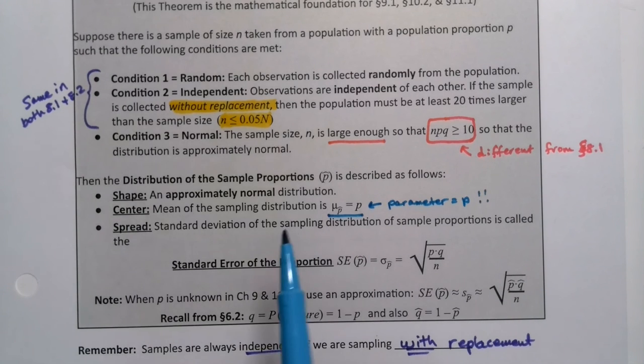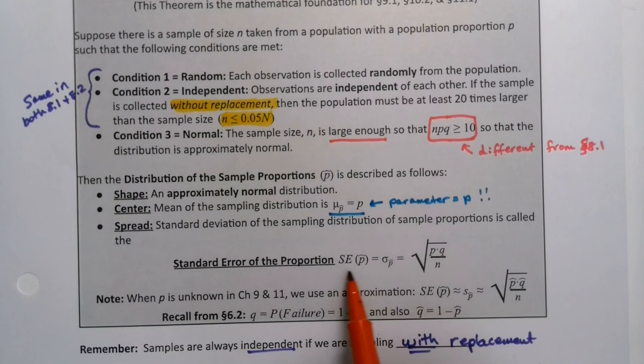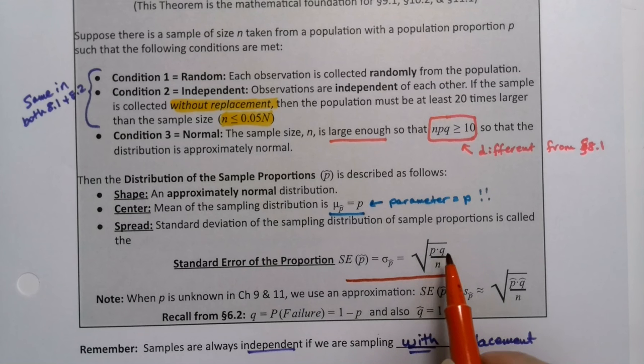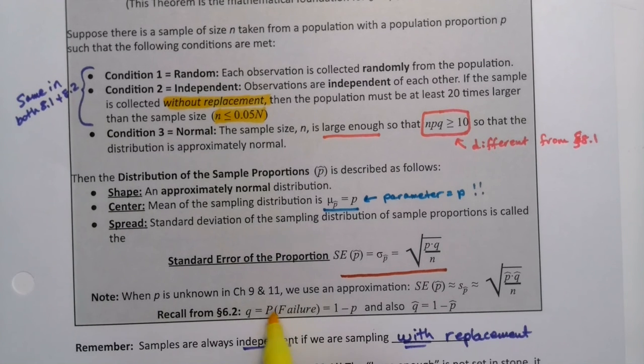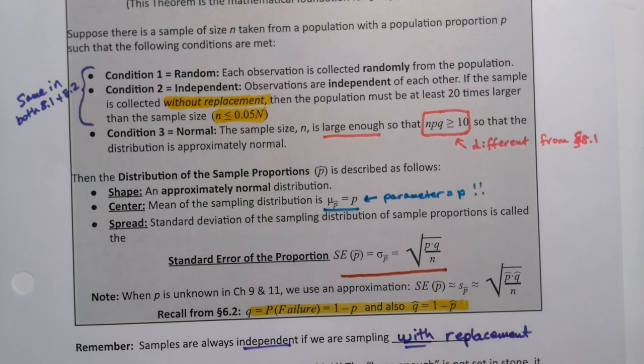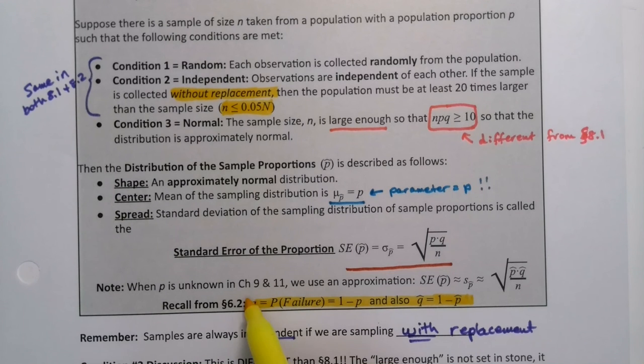And then the spread will be the standard error of the P-hats, which is known as sigma sub-P-hat, which we already saw. It's square root of PQ divided by N. Or in other words, P times 1 minus P divided by N. And I put a little note down here, remember, that 1 minus P is the probability of failure. So Q is 1 minus P.